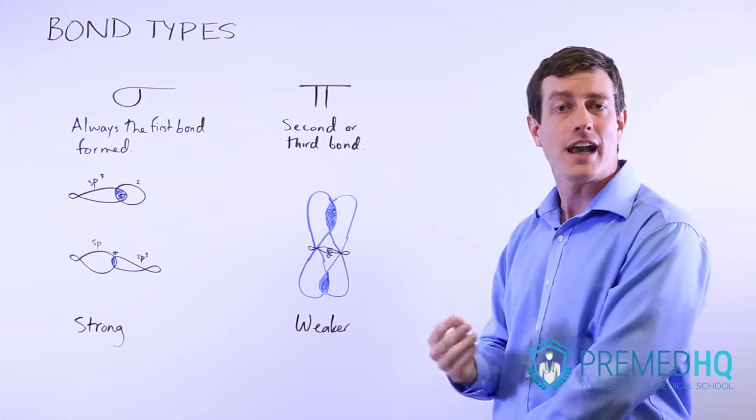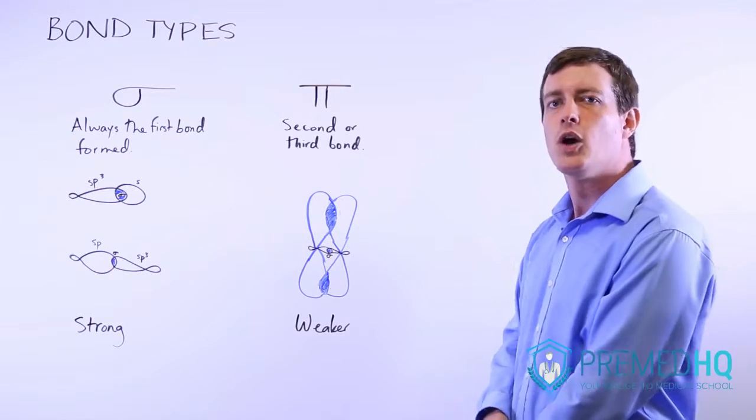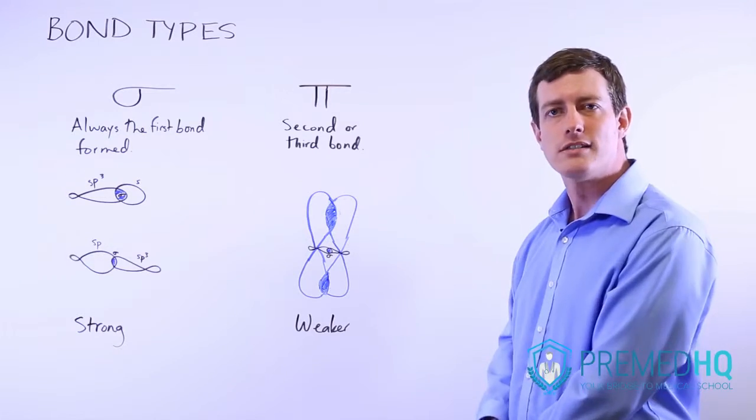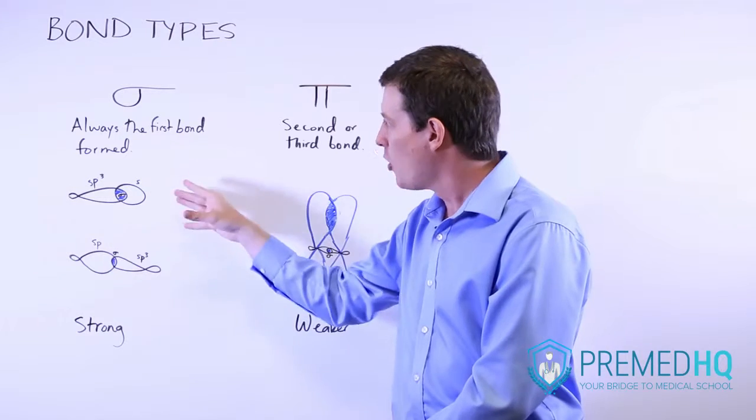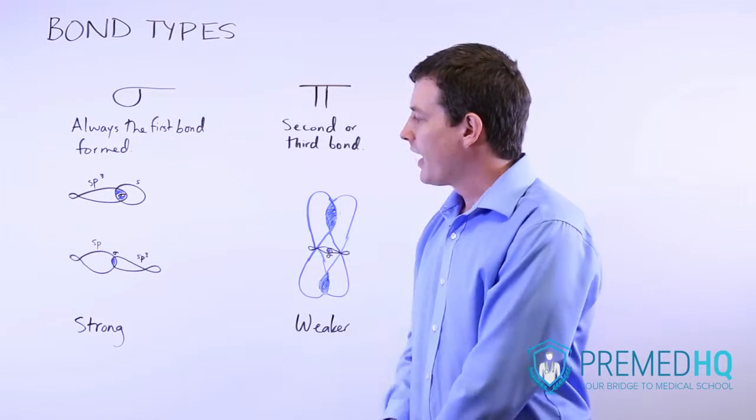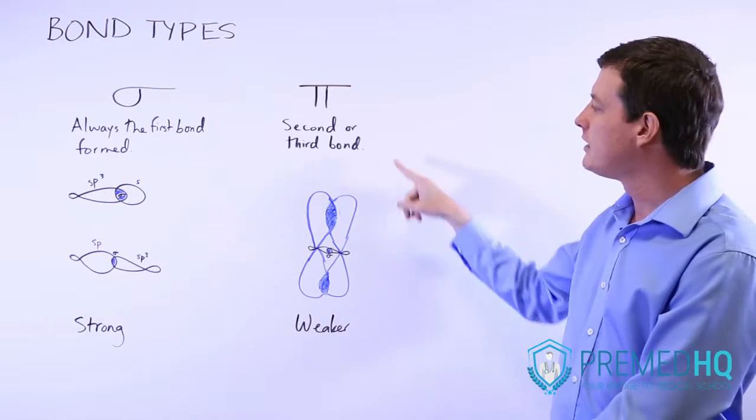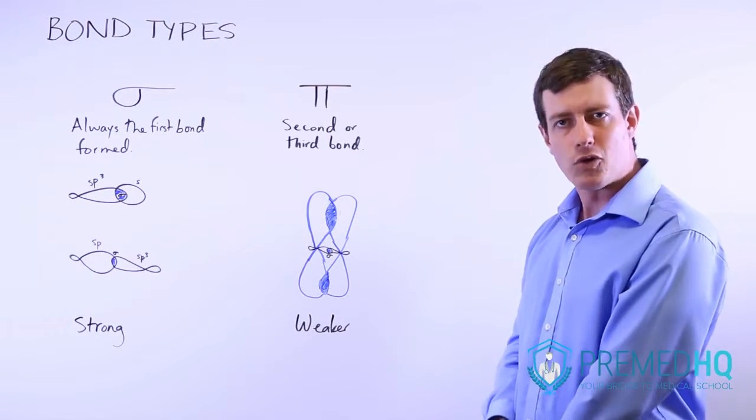As you move into organic chemistry, you'll notice that often the first bond broken will be a pi bond because of its general weakness. Recognize the overall framework: s orbitals are always involved in sigma bonds, and they are strong. You need parallel p orbital clouds for a pi bond to be formed.